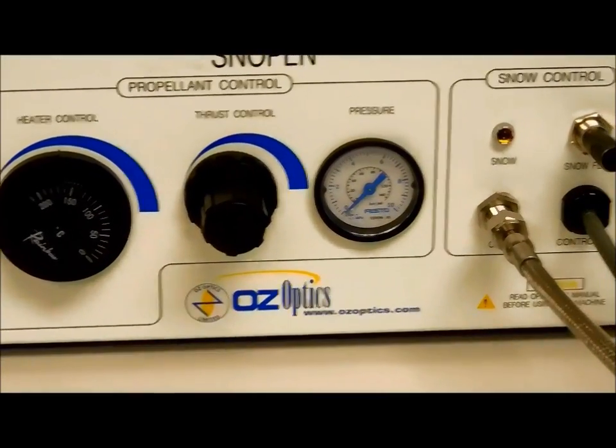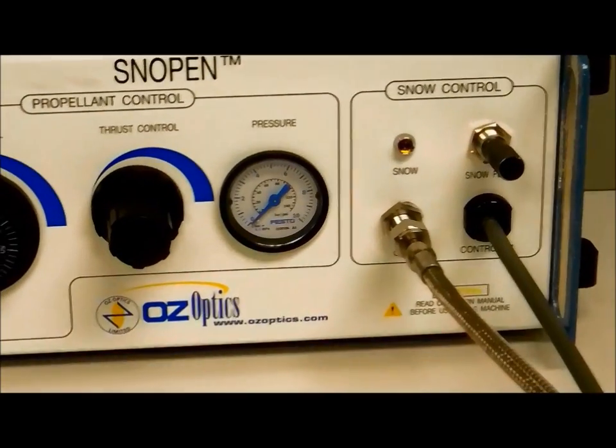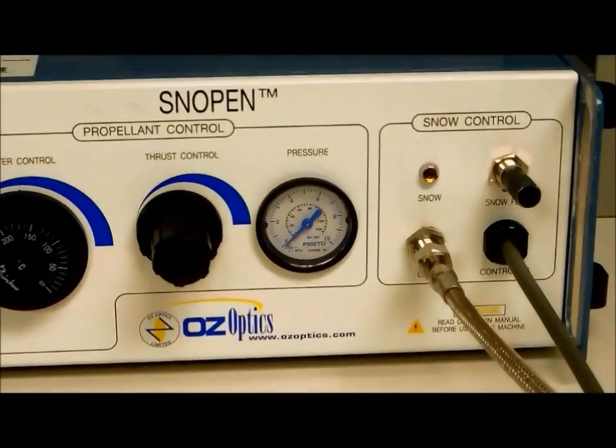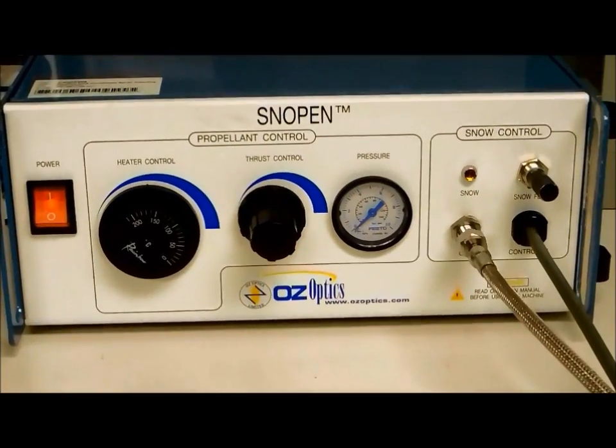Basically with a needle valve, we control the amount of CO2 which comes into the capillary and at the end at the output of the snow pen.